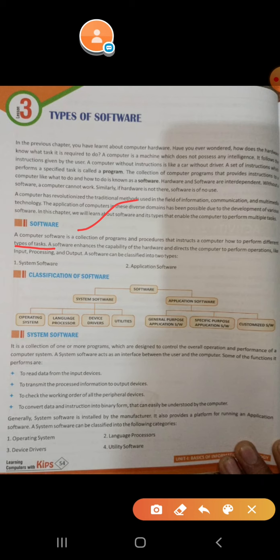So, there are two types of software. First is system software and second is application software.